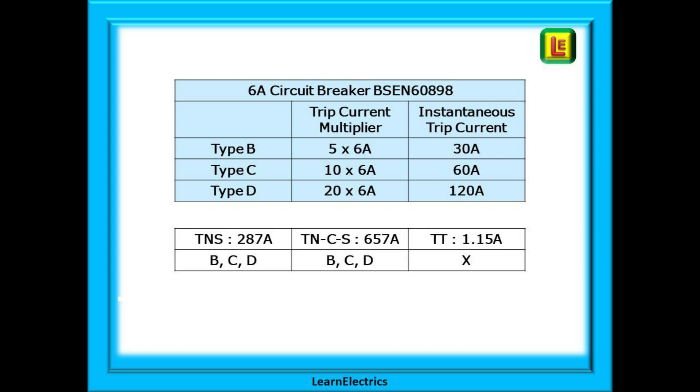What does this mean for each of the earthing systems? For a TNS system enough fault current will flow through a 6 amp breaker to operate a type B or C or D breaker within the required time for safety. For TNCS the same is also true. The 6 amp MCB will trip safely for types B, C and D. But a TT system does not have a big enough fault current to cause operation of any circuit breaker. And this is one reason that RCD devices are always installed as additional protection in TT systems. But this is discussed in detail in another video.